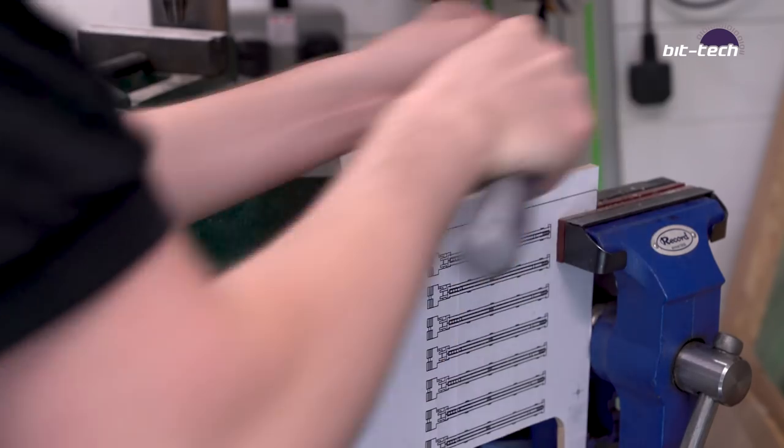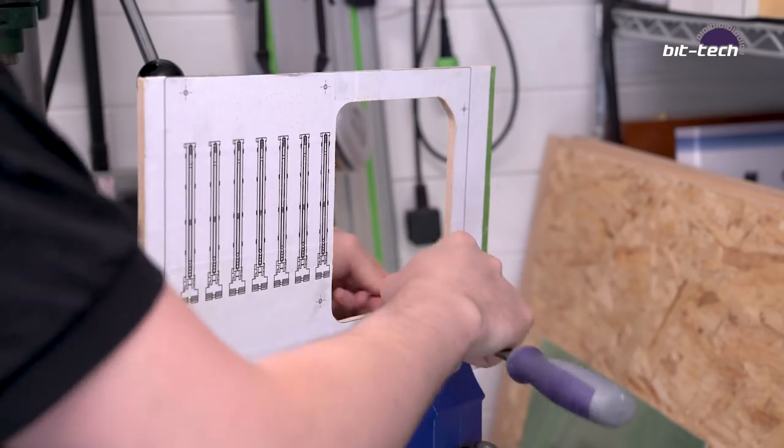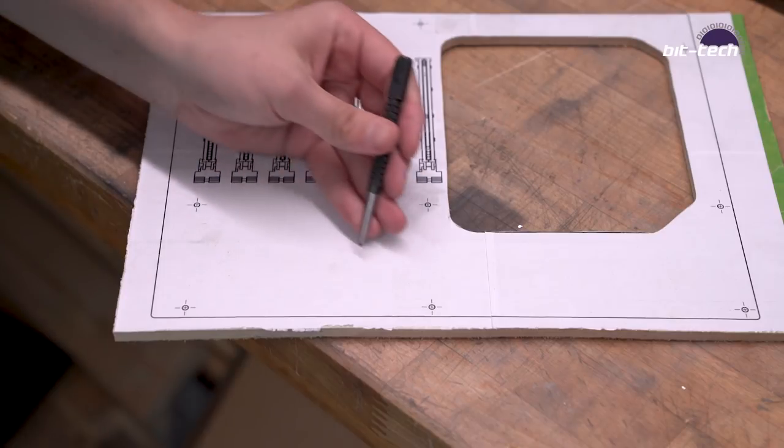So for this example I've just roughly cut out a piece of MDF. If you're going to be using your own design, obviously you want to take more care of this, but really the design itself doesn't matter. The important thing are the mounting holes and that's what we're going to see to now.